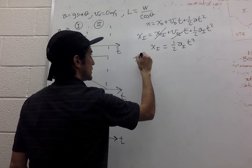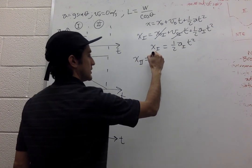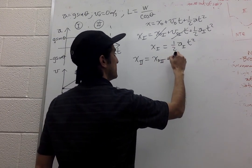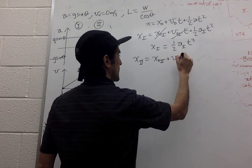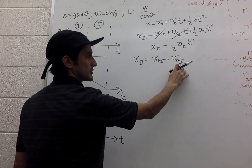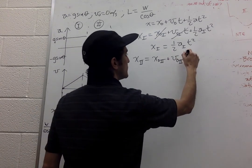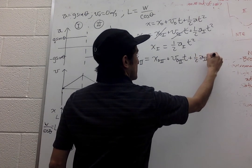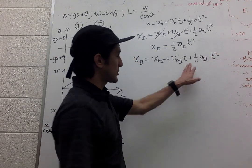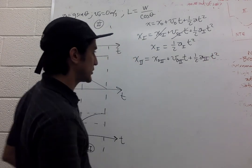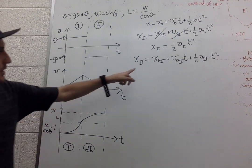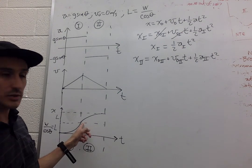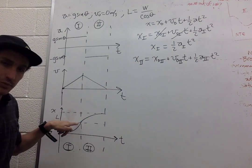So then x2 is going to be initial position of 2 plus initial velocity times t plus 1/2 the acceleration in the second segment times t squared. We know that the initial position of segment 2 is the final position of segment 1.